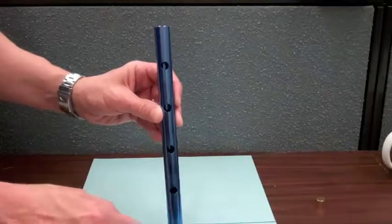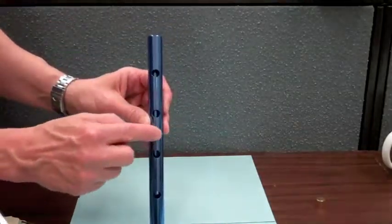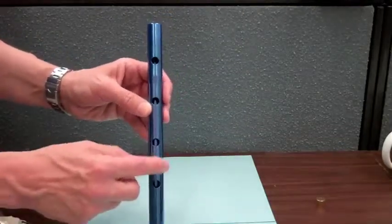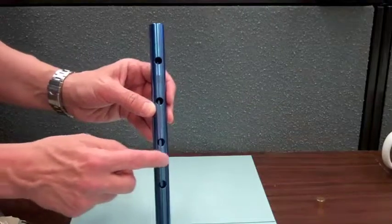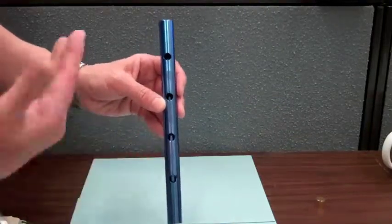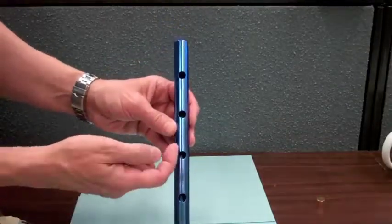So what is happening is as this magnetic slug falls, in front of it in the aluminum is a changing magnetic field. That changing magnetic field is going to induce currents flowing in the aluminum, which we call eddy currents, and associated with those eddy currents is a magnetic field.